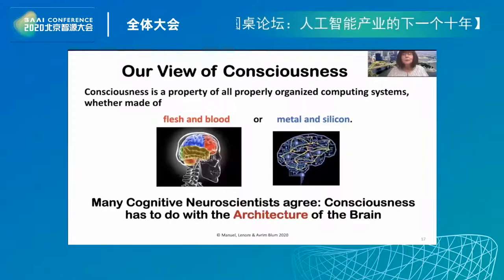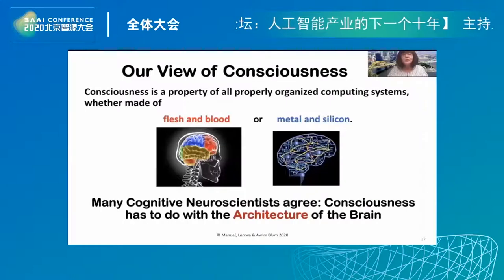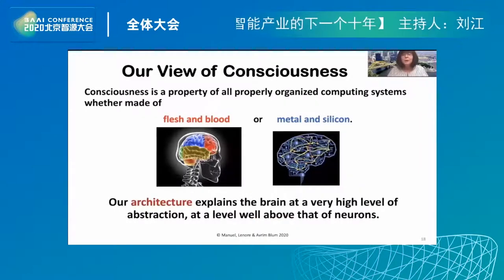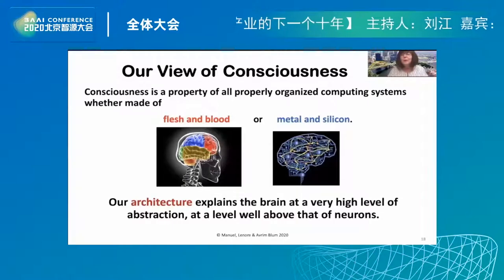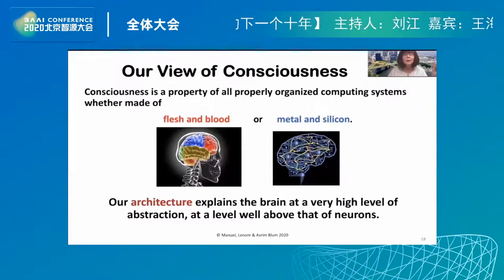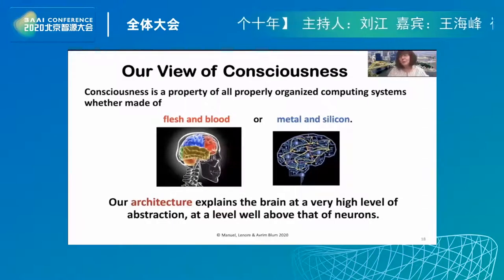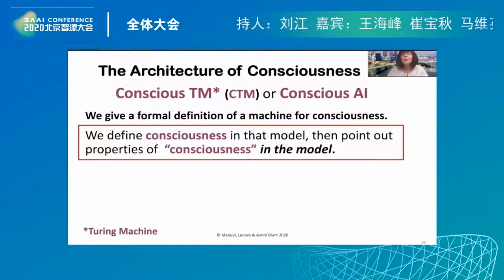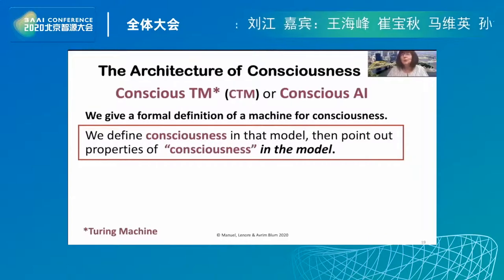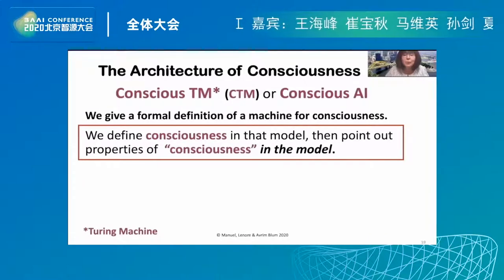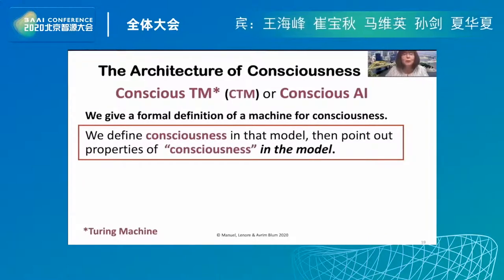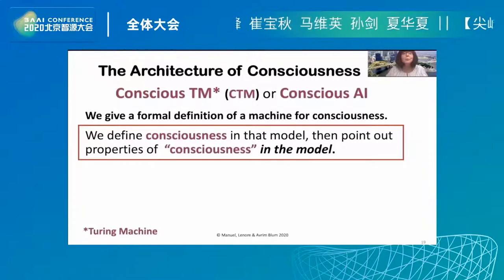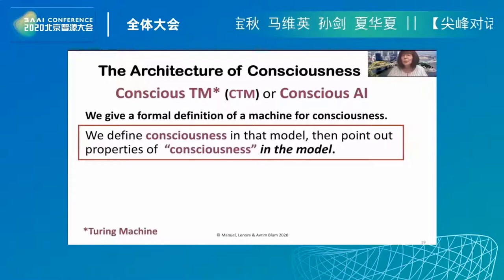Our view is that consciousness is a property of all properly organized computing systems, whether made of flesh and blood or metal and silicon. Our thesis is that the architecture of these systems is what makes them conscious. Many cognitive neuroscientists agree that consciousness has to do with the architecture of the brain — architecture explains the brain at a very high level of abstraction, well above that of neurons. We will give a formal definition of a machine for consciousness: the conscious Turing machine, or conscious AI.